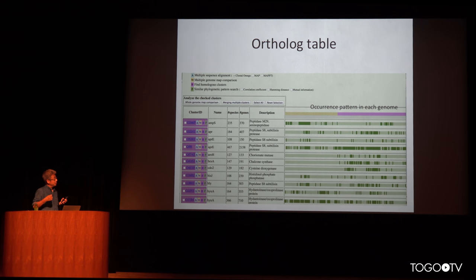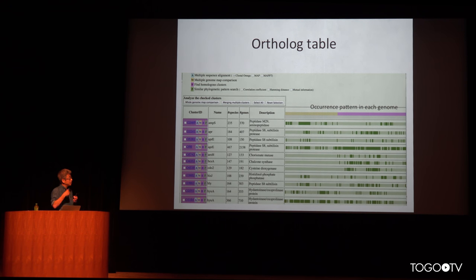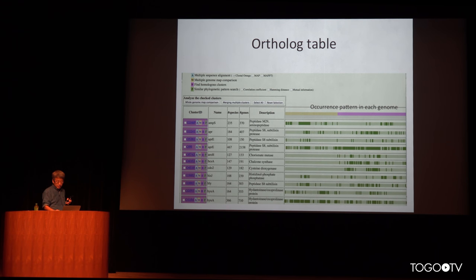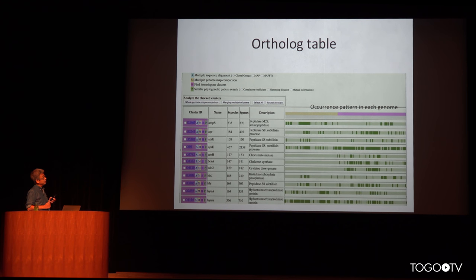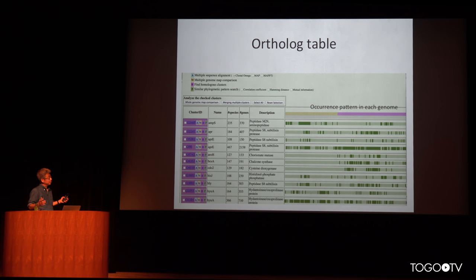This database was created using a standard genome set, which contains one genome from each genus. Here are the eukaryotes, and here are the bacteria. This table continues beyond the end of the display — this is our default table that covers the entire taxonomic range.